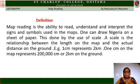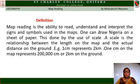One can draw Nigeria on a sheet of paper. This is done by the use of scale. A scale is the relationship between the length on the map and the actual distance on the ground. For example, 1 cm represents 2 km. That means 1 cm on the map represents 200,000 cm or 2 km on the ground.